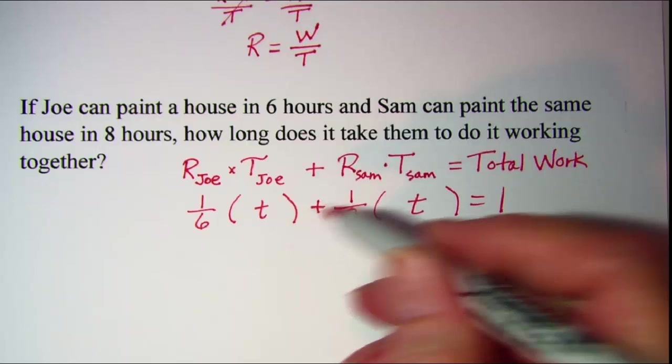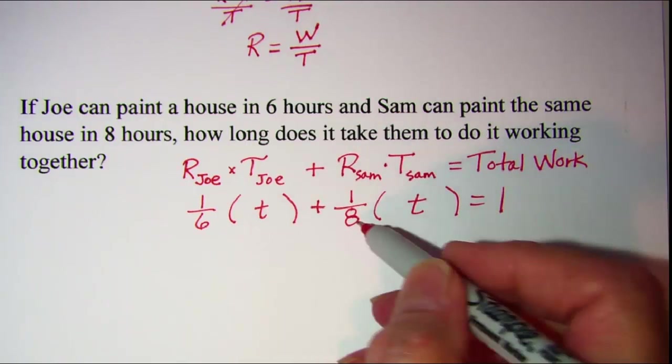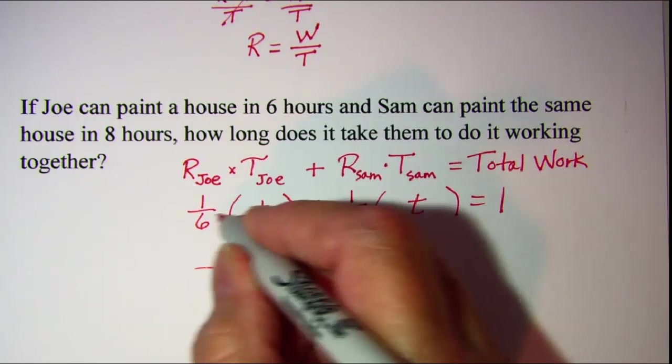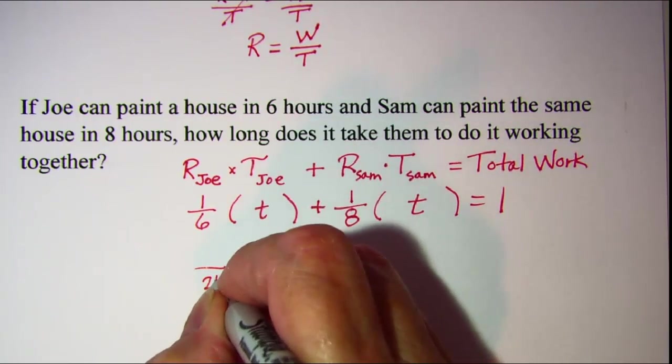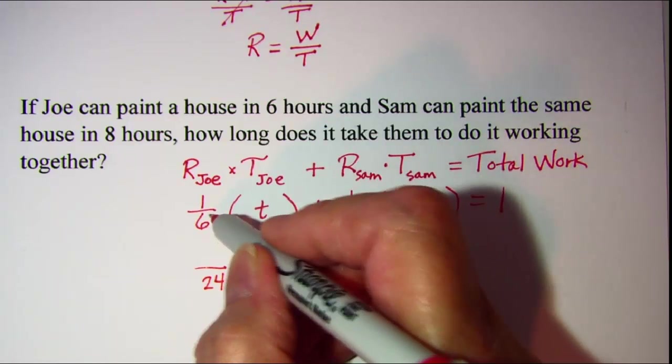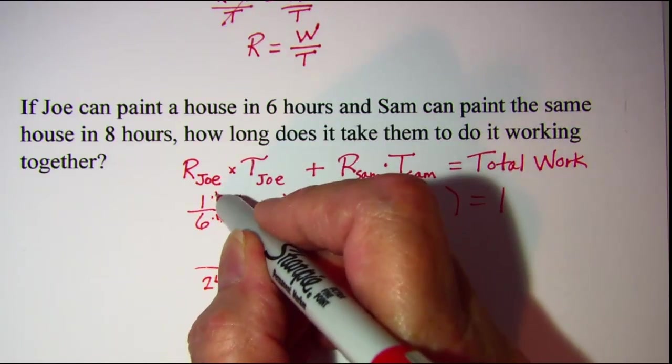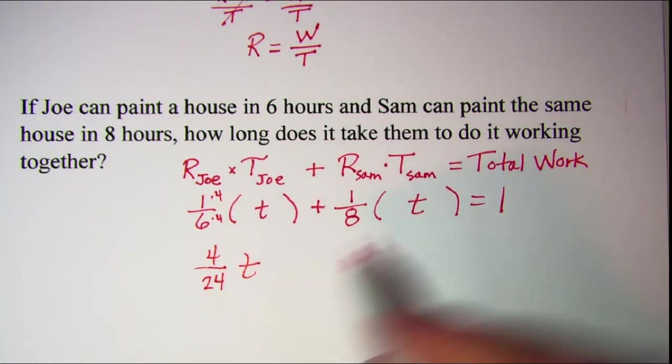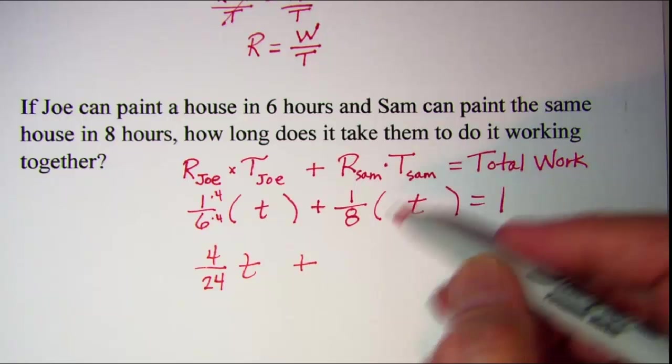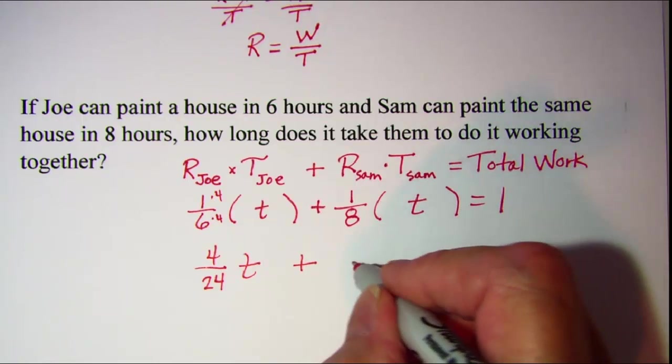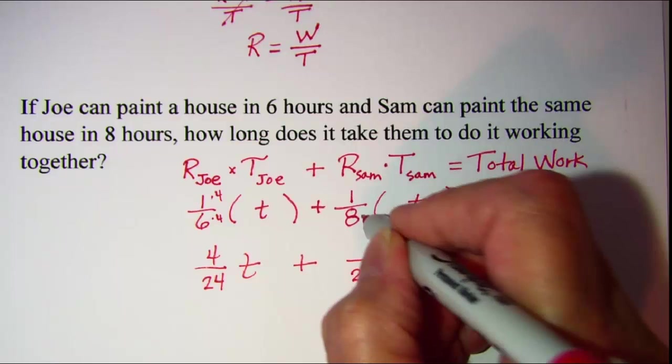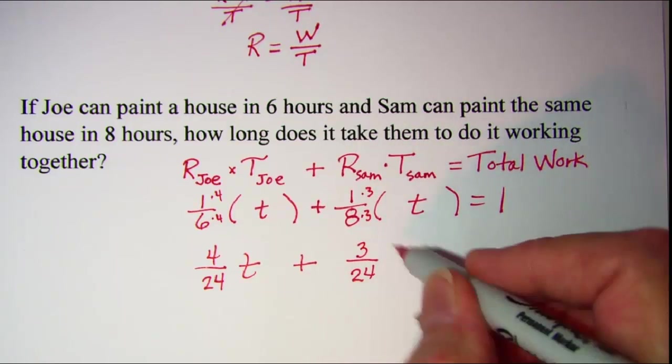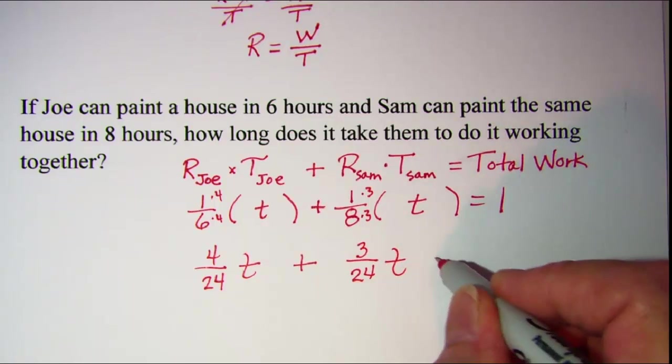I'm going to get a common denominator of 24. So if I change this to 24, I'll have to multiply top and bottom by four. So I have four twenty-fourths t for Joe, plus, and then I want a 24 in this denominator. So I'll multiply top and bottom by three and this is three twenty-fourths t equals one.